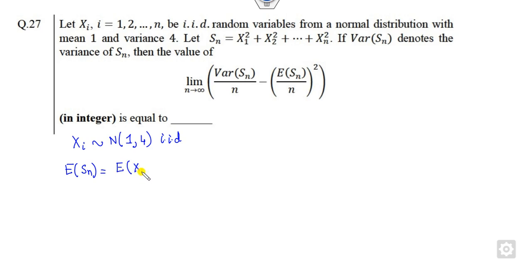This is my E of X1 square plus E of X2 square. I can write this value here because they are IID, so the means and variances are always same. What is the value of E of X1 square? We know the variance of XI is 4.